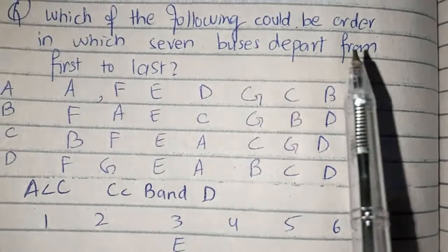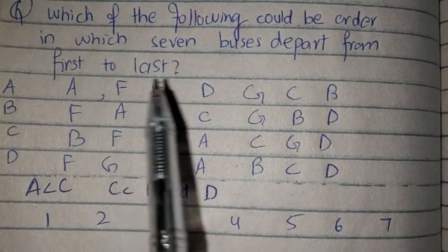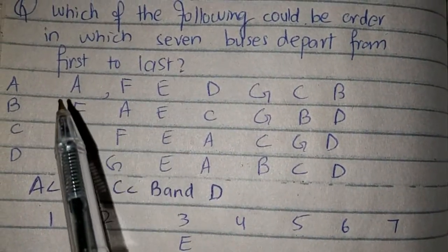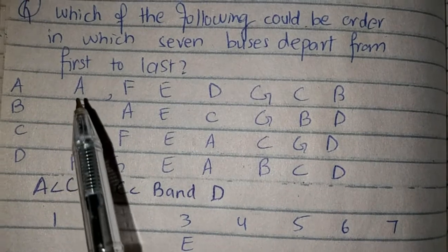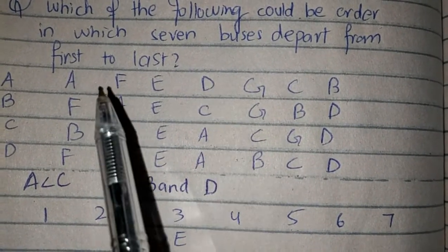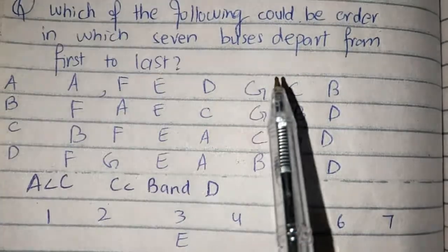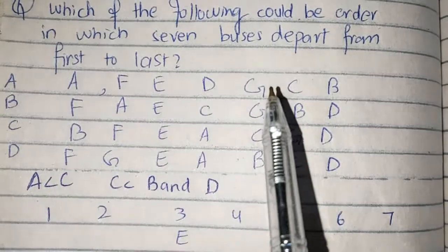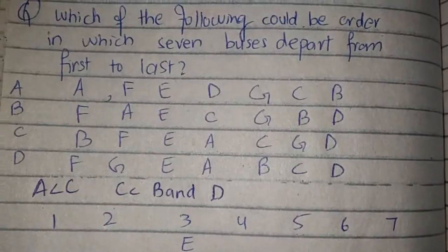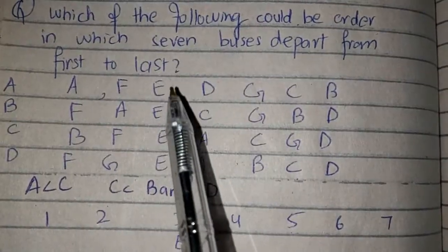Which of the following could be the order in which seven buses depart from first to last? Jo hamare par logics thi, usko check kar lete hain options mein bari bari. To first option hai: A less than C hona chahiye, A pehle jaana chahiye, C ko baad mein — to yeh theek ho gaya. C less than B and D, C ko pehle jaana chahiye B and D se — to yahan pe D pehle ja chuka hai C se, to option A jo hai woh wrong hai.